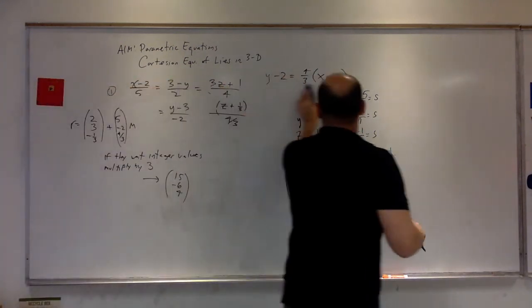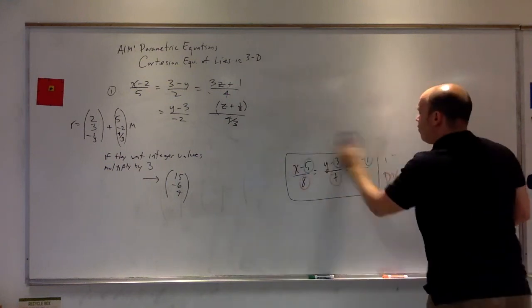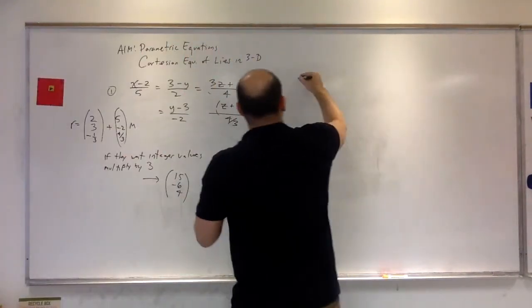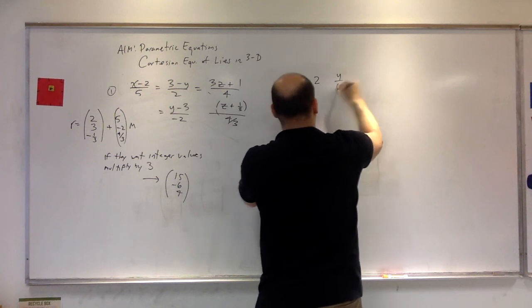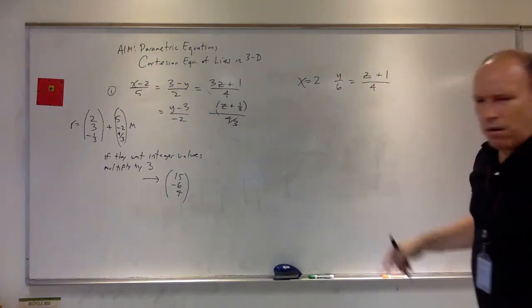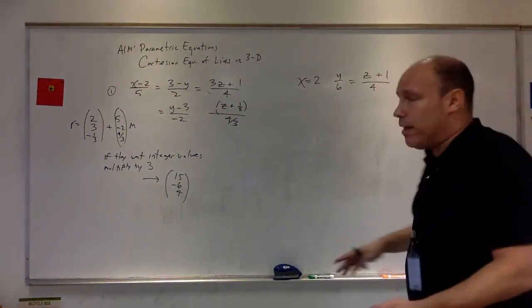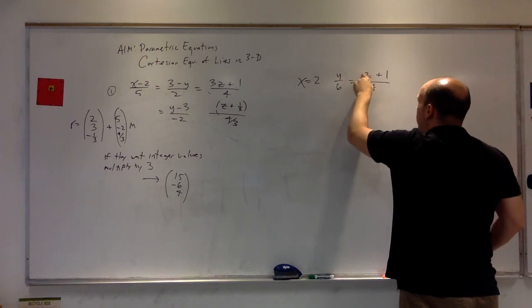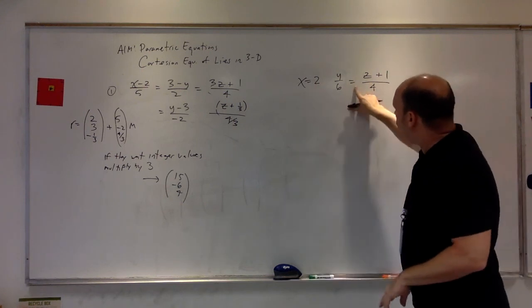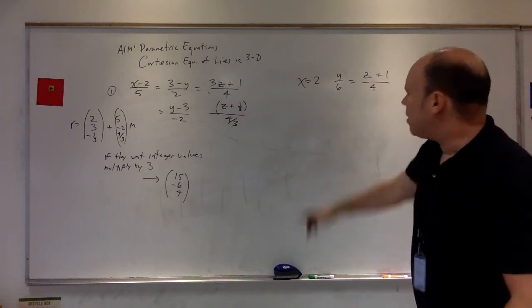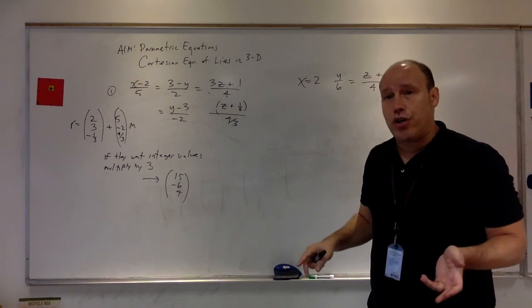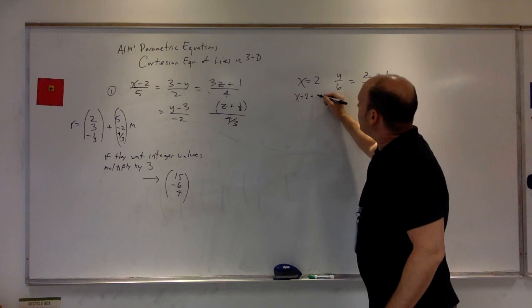Let's do one more example. There's some little tricks in there. The next example I want to look at is x equals 2, y over 6 equals z plus 1 over 4. So you look at that and you're like, is that the equation of a line? Well, yeah, it is. We have an x, a y, and a z, and they're all equal to each other. So let's think about this for a second. What's going on with the x? Well, it's always 2. So you say, does that mean it never changes? Yeah. That means it's x equals 2 plus 0t.